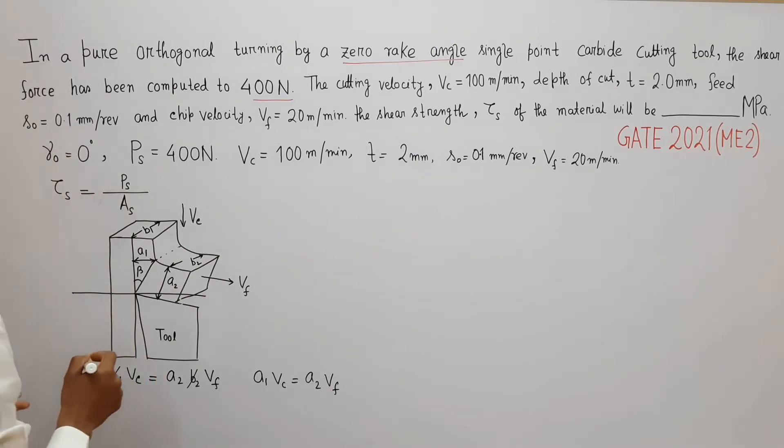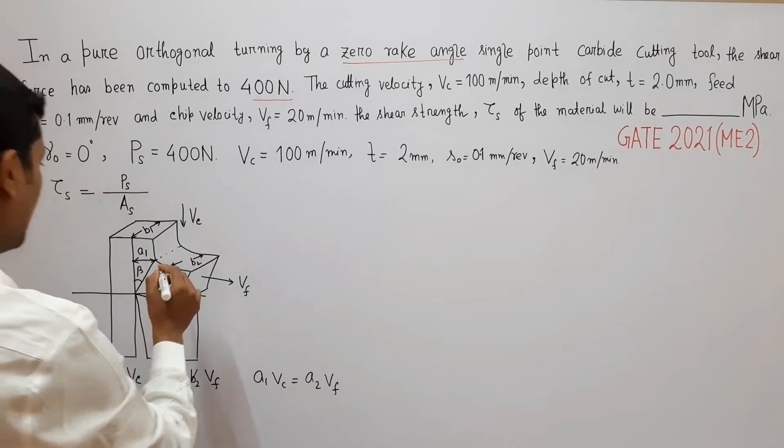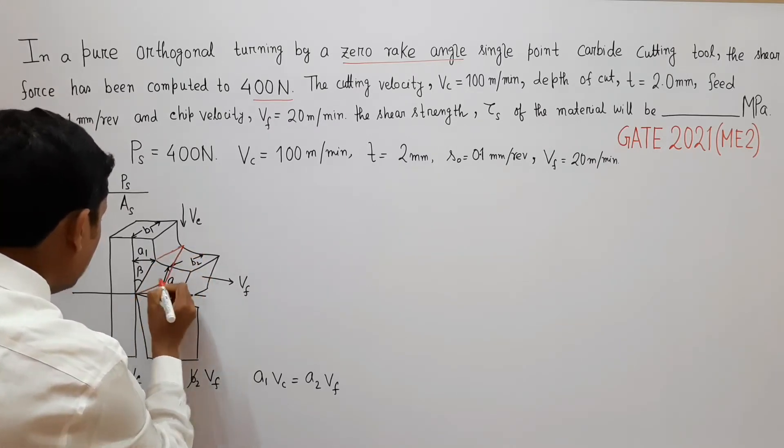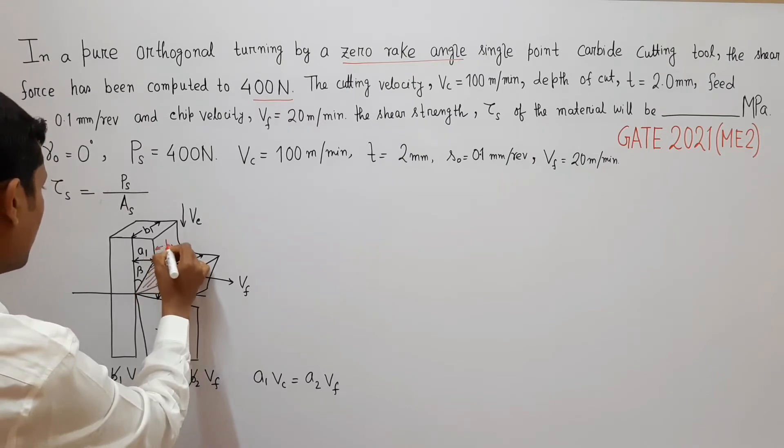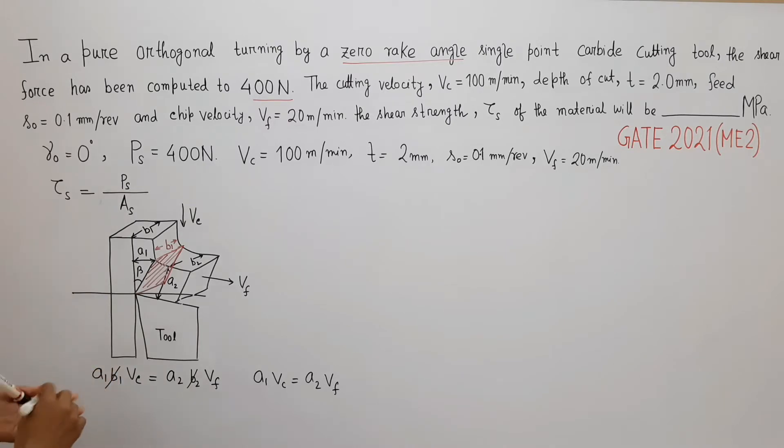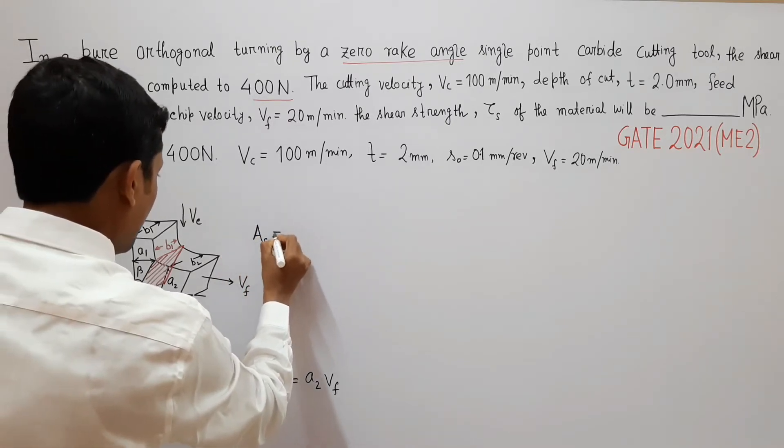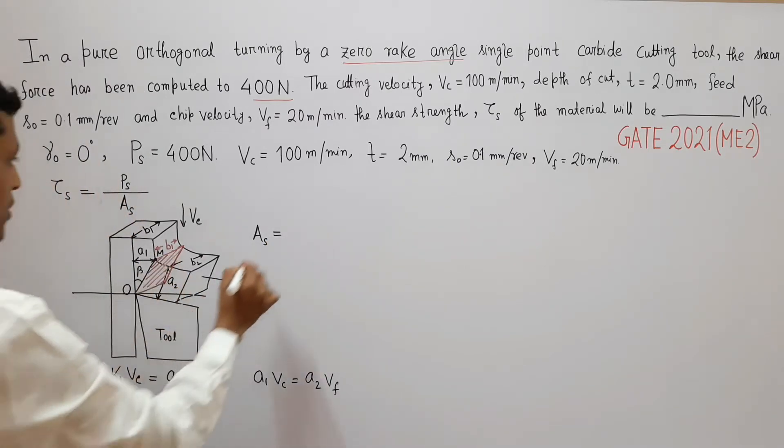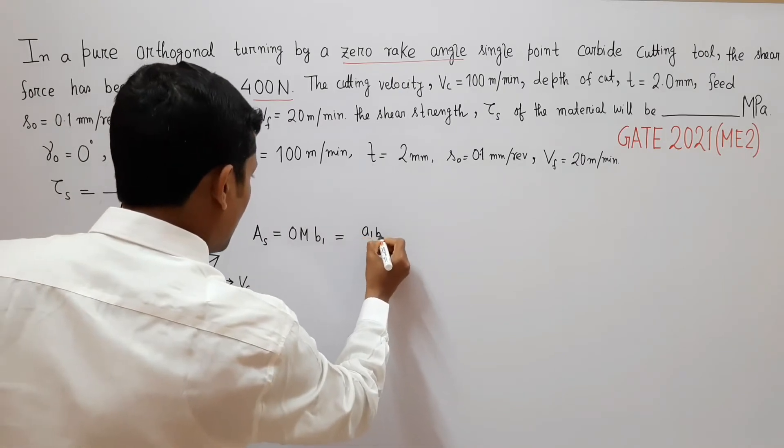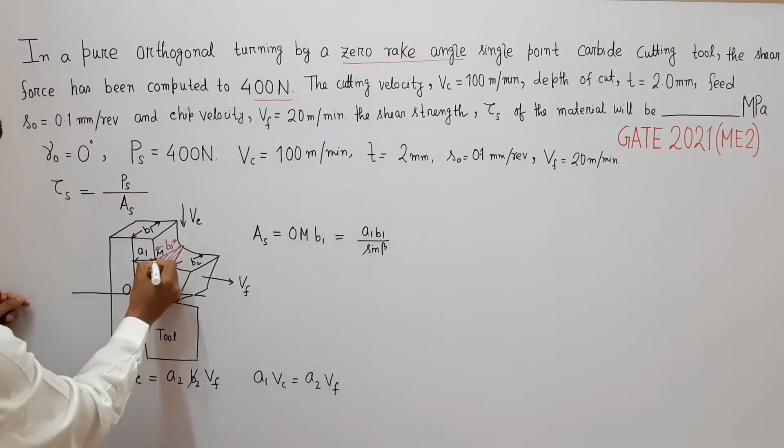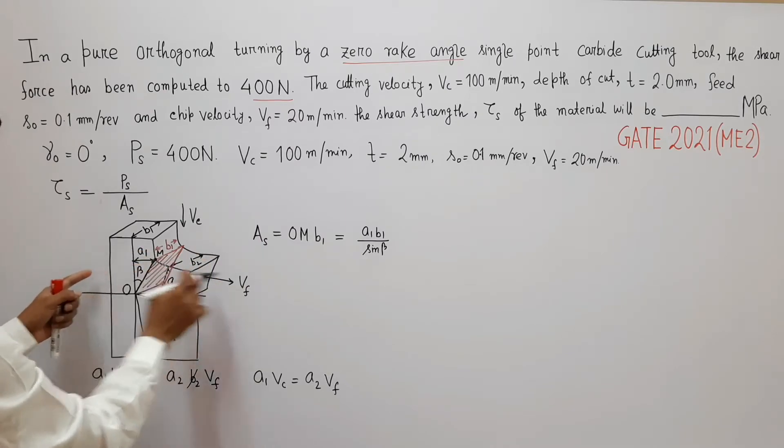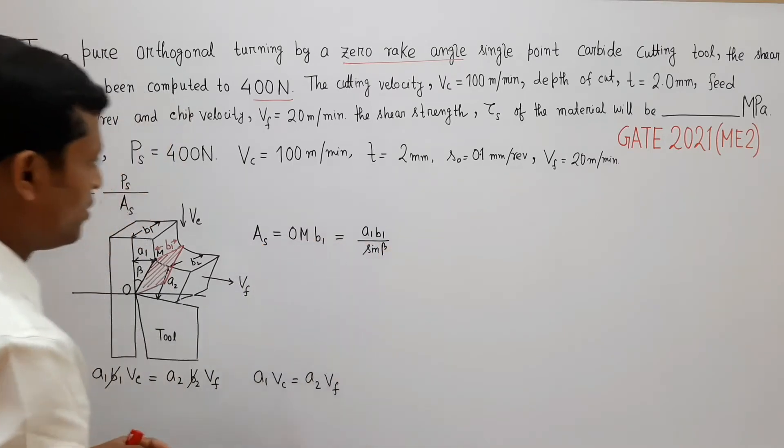Now let us define what is A_s. This area is A_s. This distance is B1. So A_s is O·M·B1 and O·M is nothing but A1 by sine beta. So A_s is A1·B1 by sine beta.